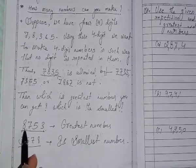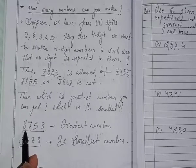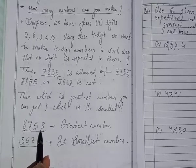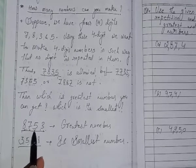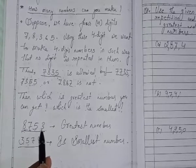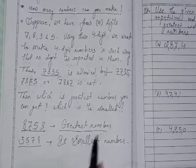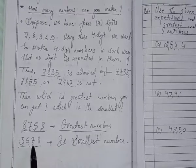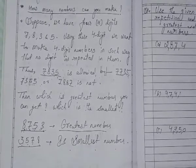You can notice this number is written in decreasing order while this is written in increasing order. Decreasing order means the first digit should be greatest among all digits. So 8753 is the greatest number while 3578 is the smallest number.